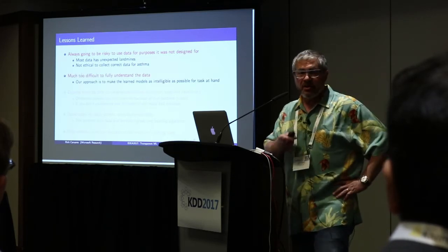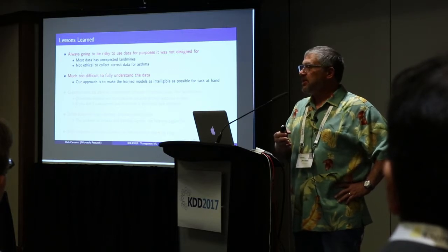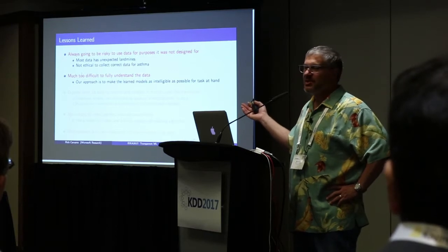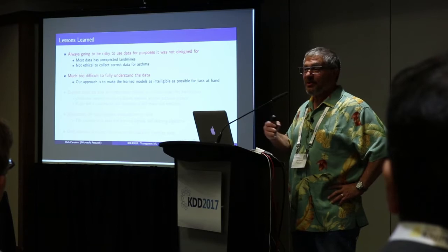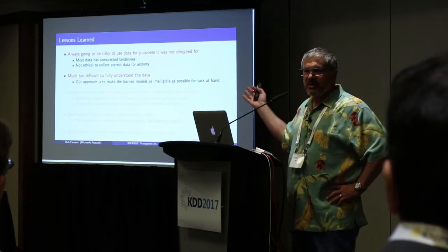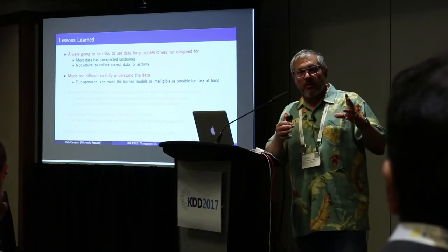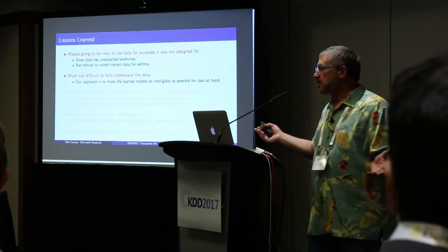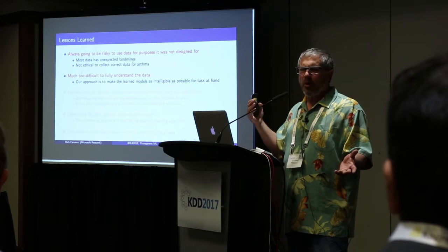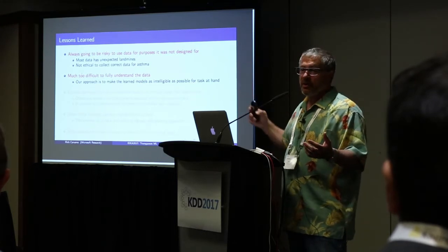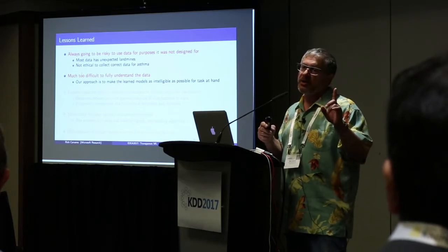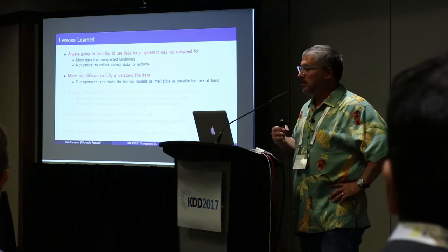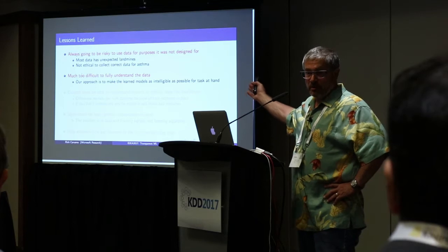You might think if we had just understood the data well enough we'd have seen this problem in advance. But to see the problem in advance, you kind of have to know you're looking for it. There could be thousands of such problems in the data set. Our approach is to look at the model trained on the data — that seems much easier than trying to understand the data. If you've got a thousand variables, understanding the data is like trying to understand all of those things at the same time. We're doing something much easier: training a model to predict one thing, and trying to understand that model. Once we look at this model, it does tell us interesting things about the data — though only things relevant to the prediction problem at hand.